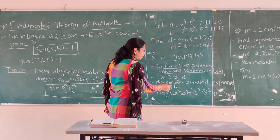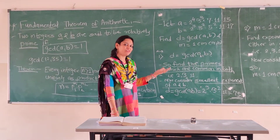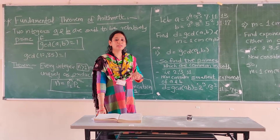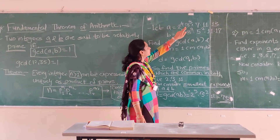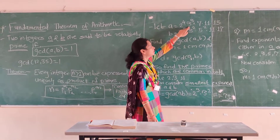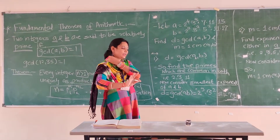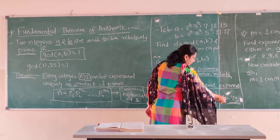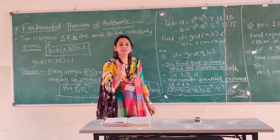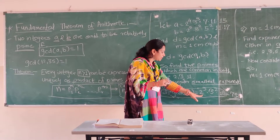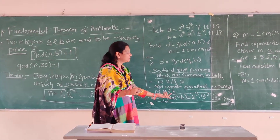In Step 2, we consider the smallest exponent of those common primes. For 2: we have 2^4 and 2^3, so we consider 2^3. For 3: we have 3^3 and 3^2, so we consider 3^2. For 11: both have exponent 1, so it remains 11^1. Therefore GCD(a, b) = 2^3 · 3^2 · 11 = 792.